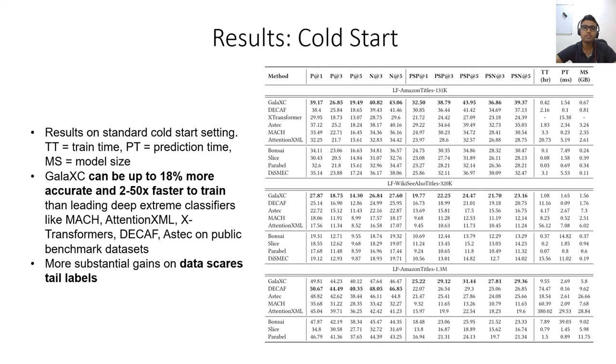The core utility of extreme classification comes from being able to accurately predict tail labels. These are labels that are rarely seen during training. Predicting these tail labels hold the key to good recommendations that are not currently being made by other algorithms and that might pleasantly surprise the users. Galaxy's gains are disproportionately more in propensity-scored metrics which reward predicting tail labels comparatively more, indicating that Galaxy can perform relatively better on tail labels. Specifically, compared to Decaf, Galaxy can be up to 3% better in PSP at 5 metric.